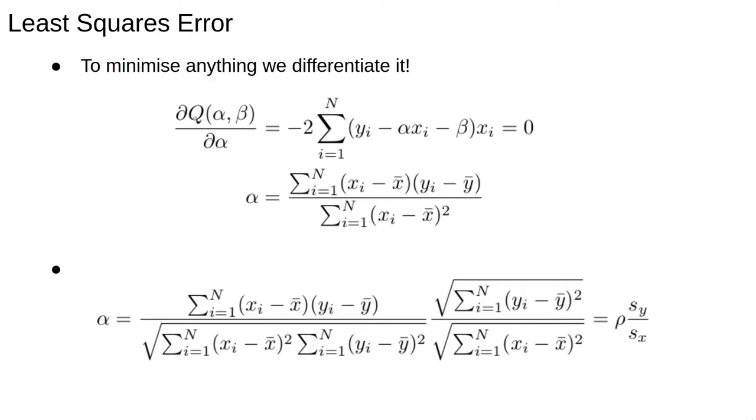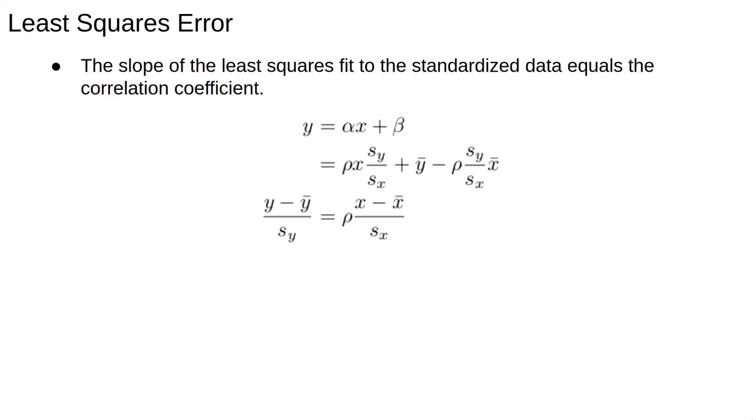Put simply, the slope of the line that best fits is equal to the correlation coefficient times the ratio of the standard deviations of the x and y data. We can substitute this back into the original equation and rewrite it to show that the correlation coefficient is the slope of the least squares fit to the standardized data. This hopefully helps you to think about the relationship between the correlation coefficient and the slope.